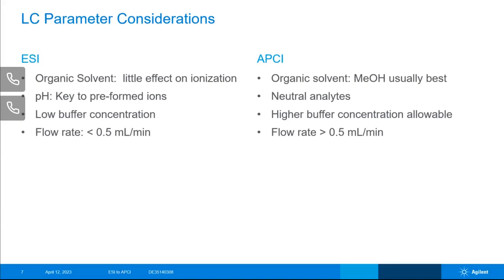In ESI, the organic solvent has little effect on ionization. It can be very important for your separation, but it's not going to influence your sensitivity on your mass spec that much. In ESI, you would usually try to control the pH because you want to form preformed ions in the solution. Generally you would want to keep it to a low buffer concentration and a lower flow rate of less than 0.5 mL per minute.